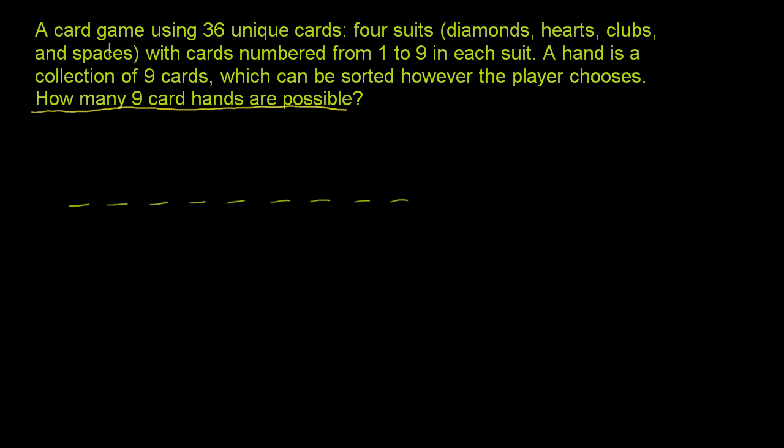For the very first card, how many possible cards can I pick from? Well, there's 36 unique cards. But then that's now part of my hand. For the second slot, I've already picked one, so there'll only be 35 to pick from. Then for the third slot, 34, and it keeps going: 33, 32, 31, 30, 29, and 28. So you might want to say that there are 36×35×34×33×32×31×30×29×28 possible hands.